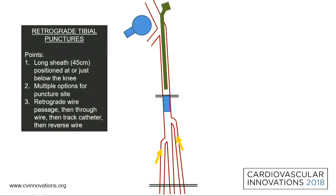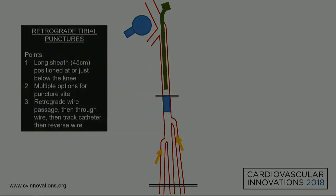When dealing with popliteal disease it's important to have a long sheath down to the level of the popliteal artery for maximum support — that's usually a 45-centimeter sheath.